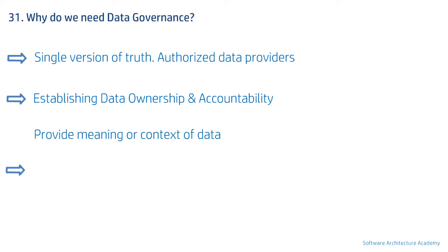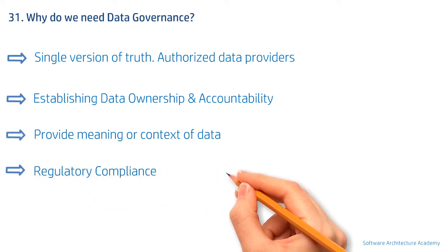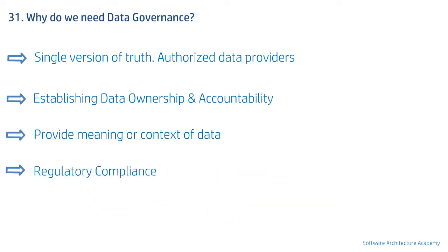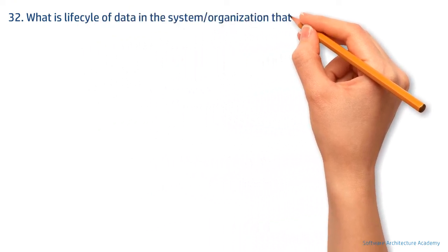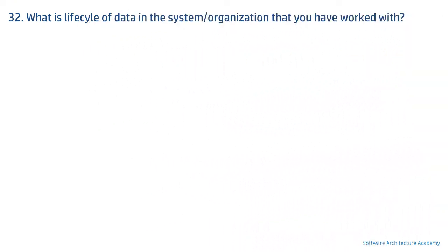Third, there was no defined purpose or importance of a data set or data element to an organization, which often hindered critical decision making. Hence there was a need to define meaning and context of data. Finally, regulatory compliance: regulators in many countries have mandated data lineage to be maintained and data quality controls to be put in place for key business elements.